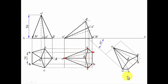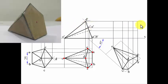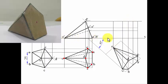Now looking at the object from the front, we draw projector lines upward from the step-three top view and bring horizontal projectors from step two's front view across to the right. The intersections give us all front-view points: point D is where the horizontal for D meets the vertical for D; point O is where the horizontal for O meets its vertical projector.